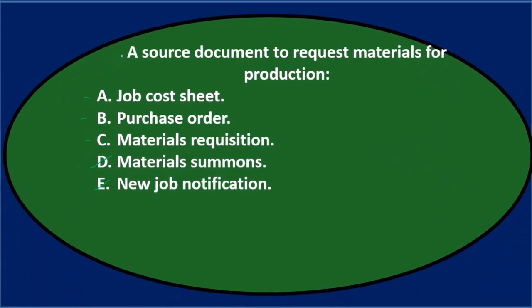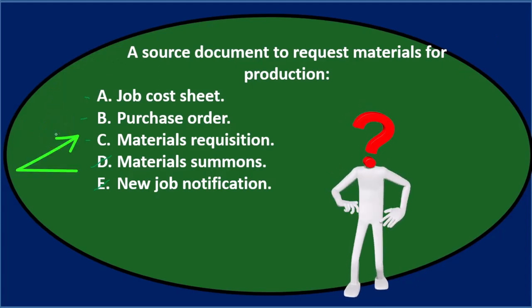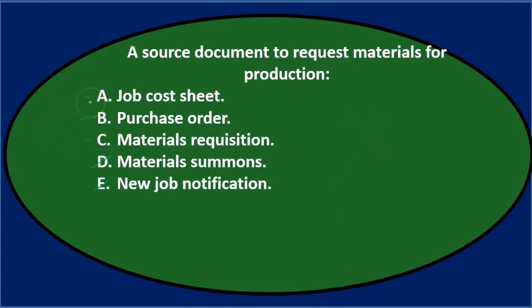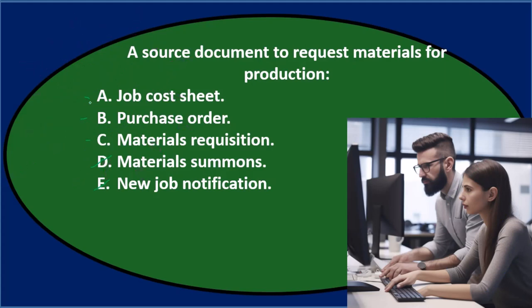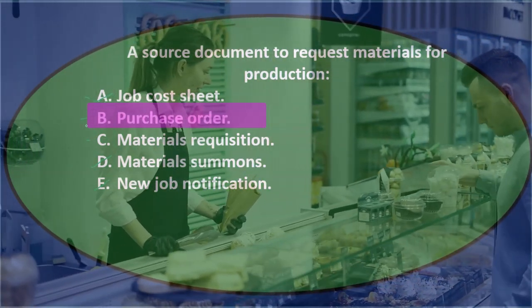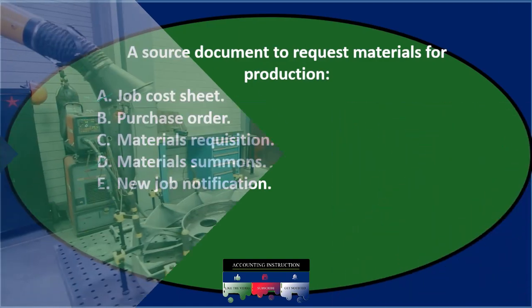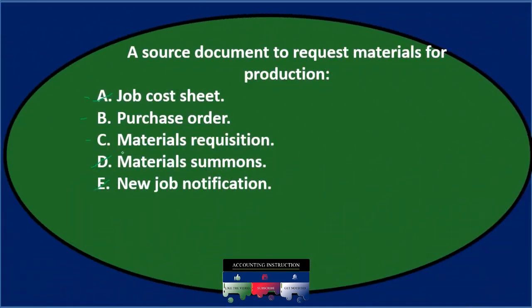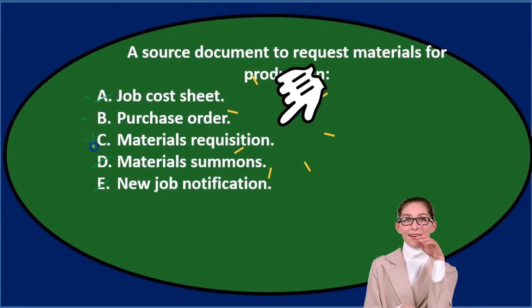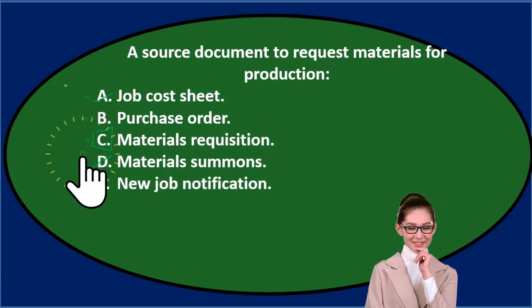So going through again, we're down to A, B, or C. I don't think it's A because the job cost sheet includes everything — materials, labor, and overhead — that's where we track it, not the requesting document. Between purchase order and materials requisition: the purchase order is what we use to request from the vendor when buying materials. But when getting materials from the warehouse to production, we use a materials requisition form. So C is the answer — a source document to request materials for production is C: materials requisition.